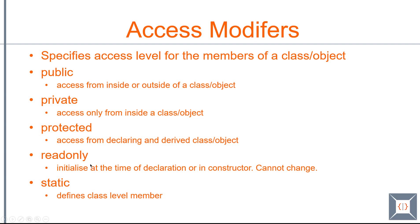And then we have read-only. Read-only is a little bit different from the three we have seen above, because you can use any of those three modifiers along with the read-only modifier. Basically when you say read-only, you are saying that once the value is assigned you cannot change it. There are two places where you can assign a value for any read-only member: the first is at the point of declaration, and the second is within the constructor. Other than these two places you cannot assign a value to a read-only property, and once the value is assigned you cannot change it.